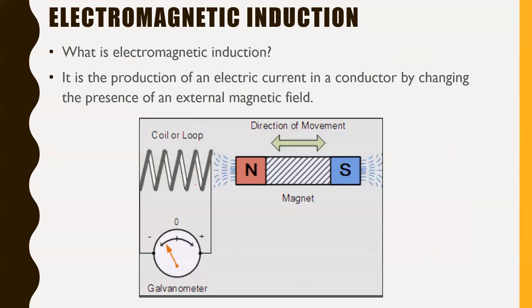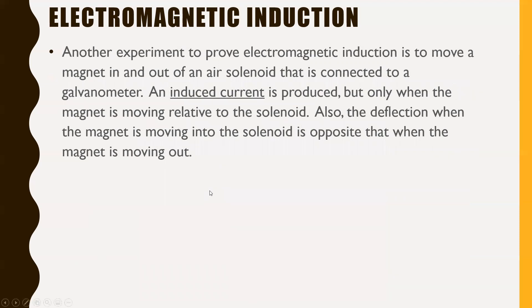Going back to the earlier picture: just having a magnet sitting in a coil of wire isn't going to produce electricity. You need to change the presence of that external magnetic field — move the magnet in and out of the coil — for a current to be generated. As soon as you stop moving the magnet, that current also stops. Another experiment to prove electromagnetic induction is to move a magnet in and out of a solenoid — a coil of wire — connected to a galvanometer. An induced current is produced only when the magnet is moving relative to the solenoid. The deflection when the magnet moves in is opposite to when it moves out, giving you an alternating current — AC — as opposed to direct current, DC, which always flows in the same direction.